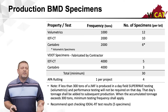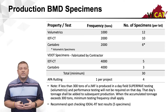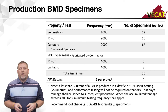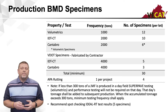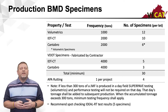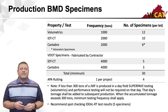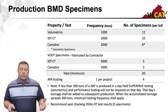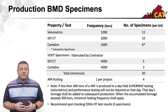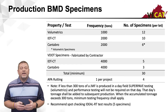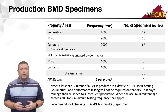The Canabro doesn't require extra specimens — it's just run on your actual volumetric specimens. Currently, VDOT requires the producer to make all their specimens. VDOT also wants you to make a set of IDT-CT specimens at 4,000 tons — one per lot — so you need an additional five specimens on top of the ten made for the producer to test, plus five for the DOT to test. With the Canabro, for one of your samples you'll need to make six volumetric pills.